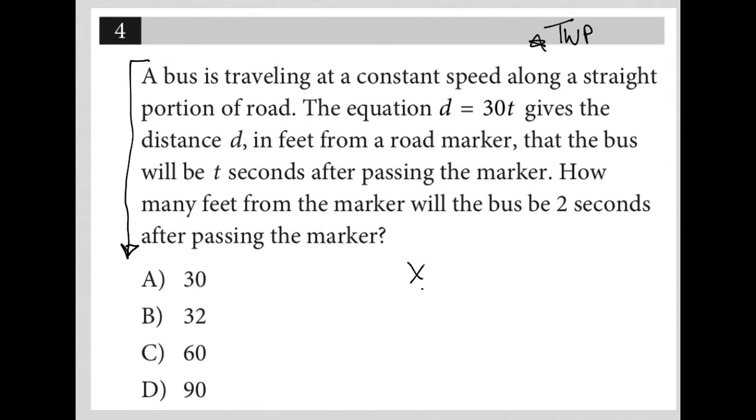Okay, so this is a marker and the bus has passed the marker. Let's say the bus is right here right now. Then the distance between those two points is my 30t, right? That's what my d is equal to.